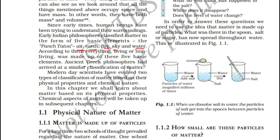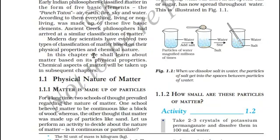Even ancient Greek philosophers had a similar idea about matter. Today, scientists classify matter into two parts: first, based on its physical properties, and second, based on its chemical nature. In this chapter, we will study about the physical properties of matter.